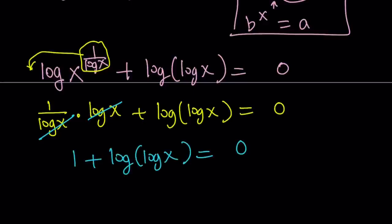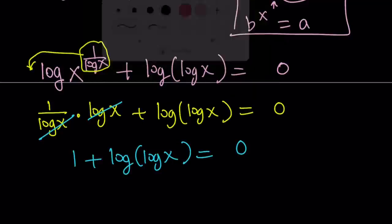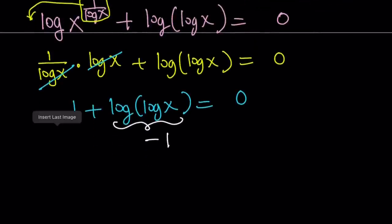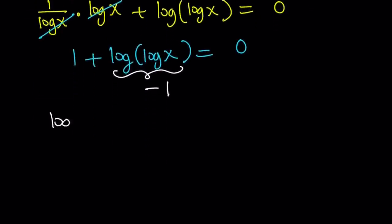Leaving us with 1 plus log log x equals 0. So 1 plus something equals 0. When you think about it, what do you get? It needs to be negative 1, right? So 1 plus negative 1 equals 0. So from here we get a simpler equation, log of log x equals negative 1.